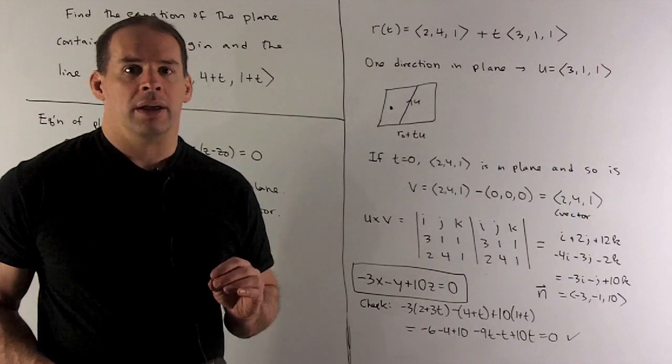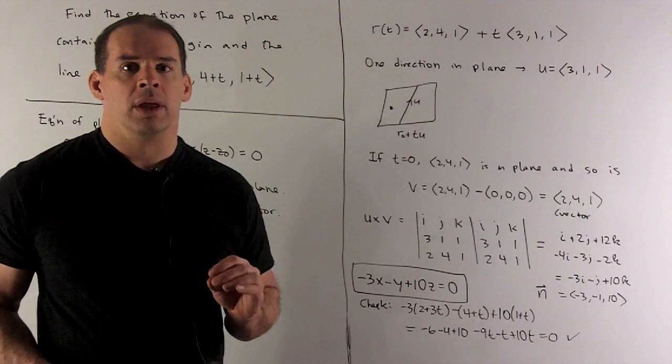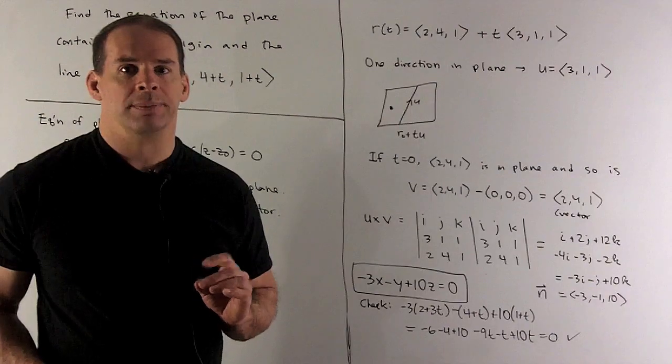So I have u equal to (3, 1, 1) and my v equal to (2, 4, 1). We stick it into our cross product, see what comes out.